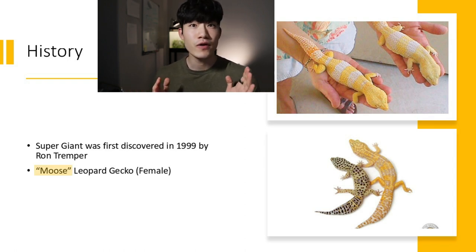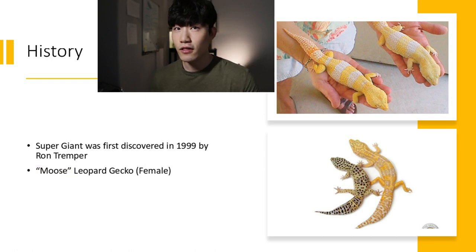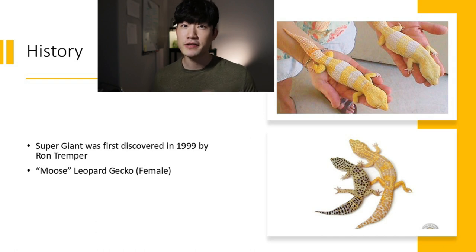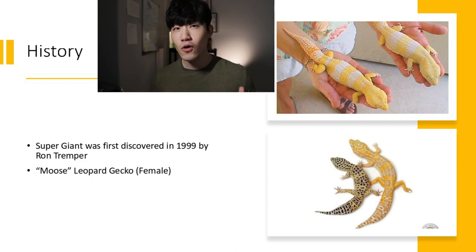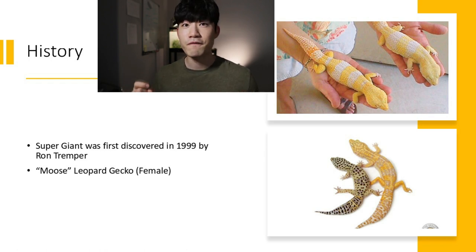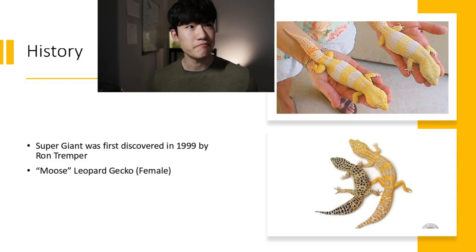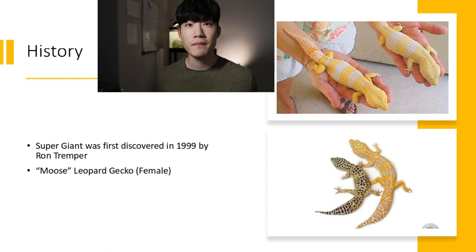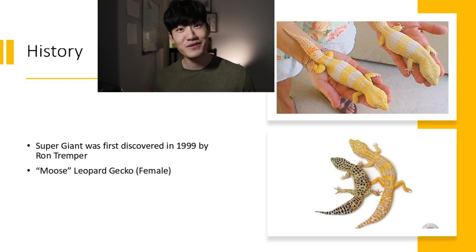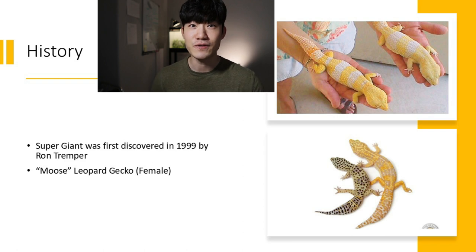A lot of breeders who had the super giant project back at the time loved putting "Moose" as the parent name, because Moose is the original and it sounds great to have the original parents in your super giant lines. Moose is one of the first super giant leopard gecko morphs produced, and it spread quickly. Some breeders are now calling this super giant the "Godzilla," so if you like Godzilla, go get some and create those big geckos in your collection.